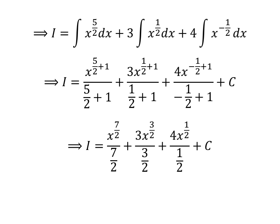Further simplification gives us I is equal to x raised to the power of 7 upon 2, upon 7 upon 2, plus 3 times x raised to the power of 3 upon 2, upon 3 upon 2, plus 4 times x raised to the power of half, upon half, plus capital C.